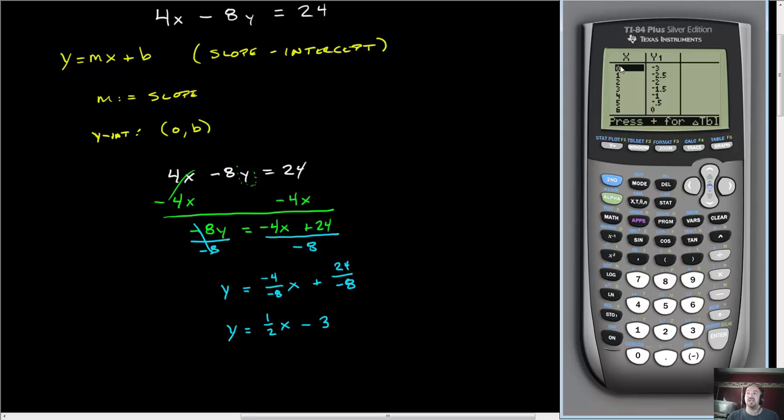If your X doesn't start at 0 or doesn't go by 1s, the easiest way to do this is to change your table set. On the 84 and its new operating system, you'll probably see press plus for the change table. But what we're going to do is press second window for table set. This very first part says table start. This is where your X value starts. Make sure that's 0, so press 0 and then press enter. You'll advance here to delta table.